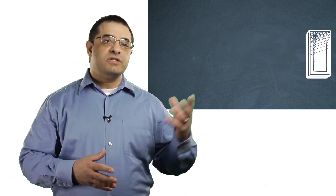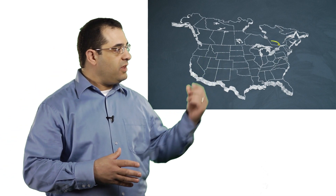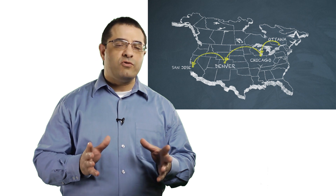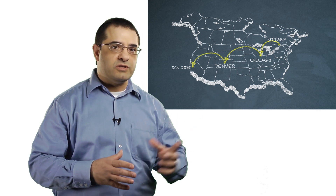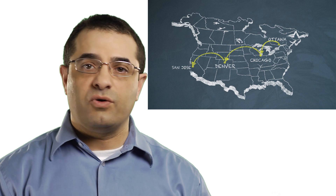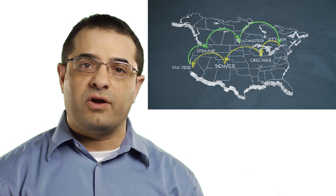Let's use an analogy to explain the concept a little bit better. Imagine you wanted to travel between Ottawa and San Jose, and the numerous and diverse paths you can take to traverse between these two points. In the reverse direction, there are also numerous and diverse paths to traverse between San Jose back to Ottawa.